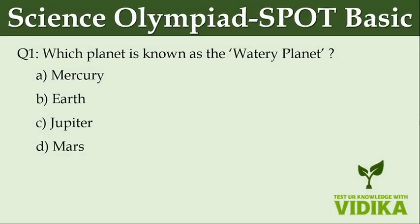Which planet is known as the watery planet? Option A: Mercury. Option B: Earth. Option C: Jupiter. Option D: Mars.